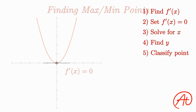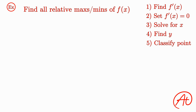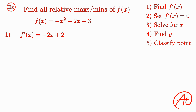Let's look at an example. Say we're asked to find all relative maxes and mins of f(x), where f(x) is equal to negative x squared plus 2x plus 3. First, let's find the function's derivative. Using the power rule, we find that f prime is equal to negative 2x plus 2. Then, since all maximums and minimums have a slope of zero, we set the derivative equal to zero and solve.